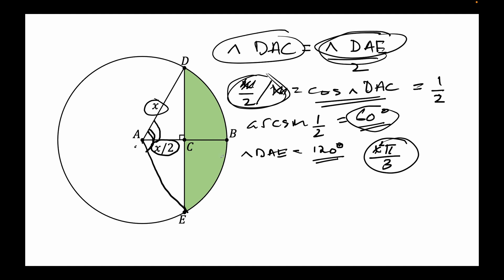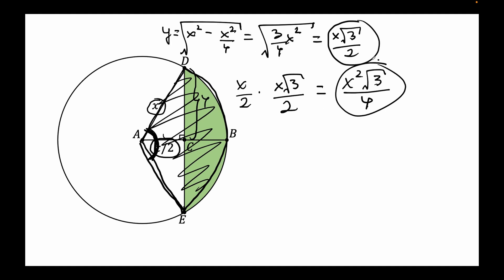So now we can easily express the area of this green part. Because remember, we already have an expression of the area of this triangle ADE. We already have an expression of the area of the sector ADBE, which is X squared pi divided by 3. So we get the green part by taking the area of the sector minus this expression, the area of the triangle ADE.